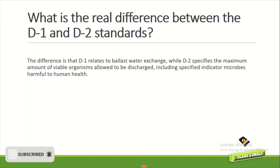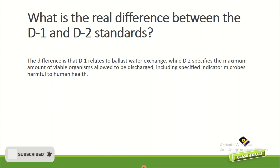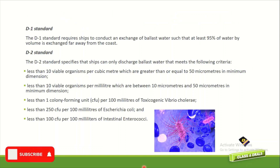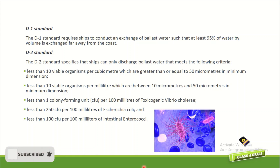What is the real difference between the D1 and D2 standards? D1 relates to ballast water exchange, while D2 specifies the maximum amount of viable organisms allowed to be discharged, including specified indicator microbes harmful to human health. In detail: the D1 standard requires ships to conduct a ballast water exchange of at least 95% of water by volume if exchanged far away from the coast. The D2 standard specifies that ships can only discharge ballast water meeting specific criteria.